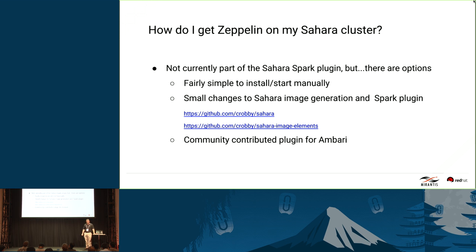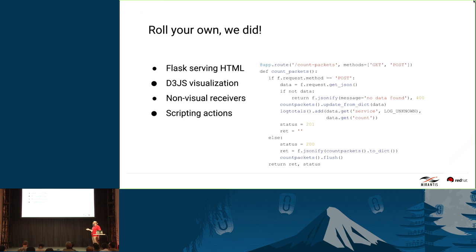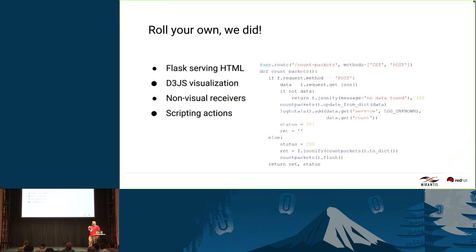We rolled our own visualization. We built a small Flask server that was getting hit by Spark telling it there was updated log information in MongoDB. We used D3.js for the visualizations. We also had non-visual receivers — learning about information coming from Spark without necessarily visualizing it. Beyond that, you could script actions based on log data: if a certain type of log message comes through, you could have Spark signal an external server, maybe tell Nova to shut down or lock the system down.